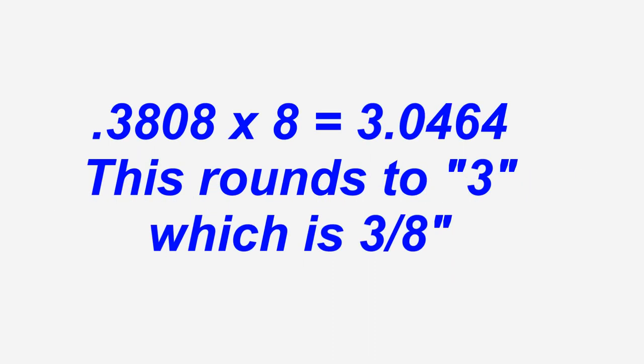To get the fraction of an inch, multiply .3808 by 8 to get 3.0464, which rounds up to 3, giving us 3/8 of an inch as a fraction of an inch.